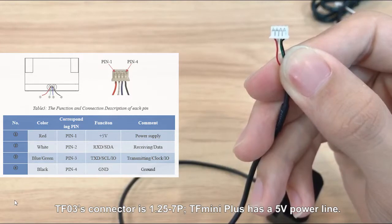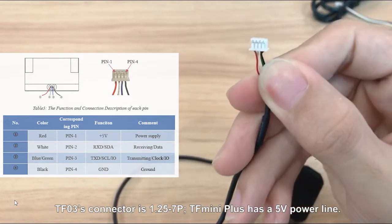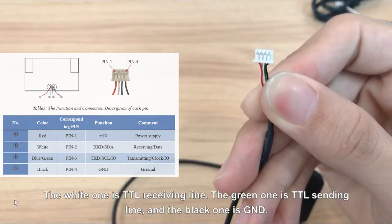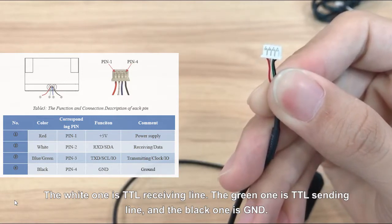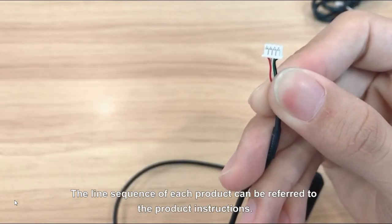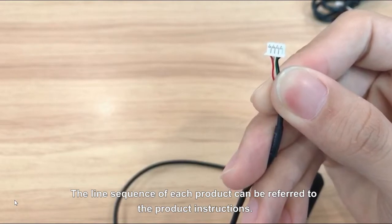TF Mini Plus has a 5V power line, the white one is TTL receiving line, the green one is TTL sending line, and the black one is ground. The line sequence of each product can be referred to the product instructions.